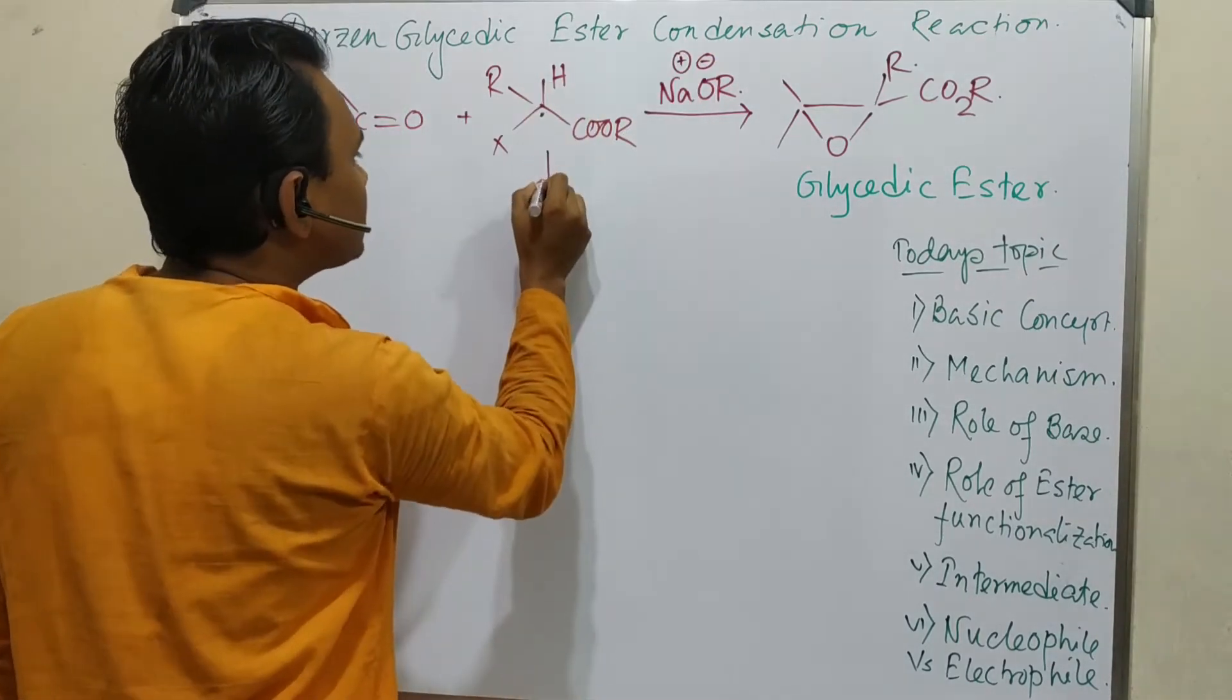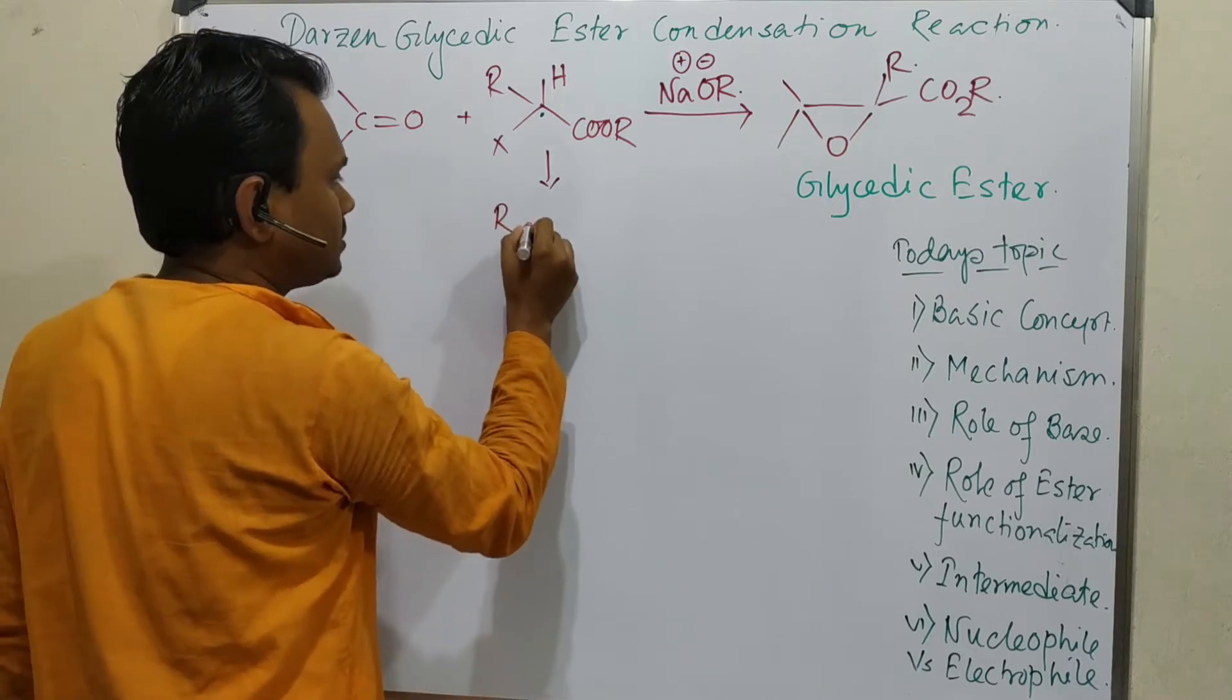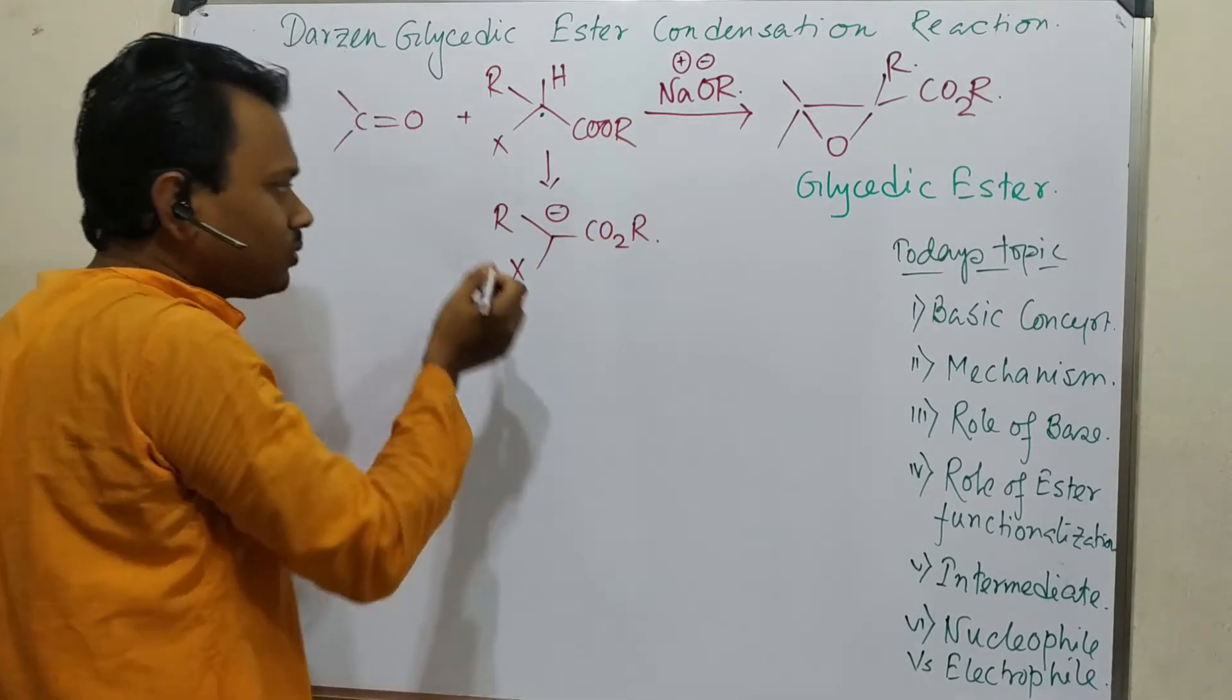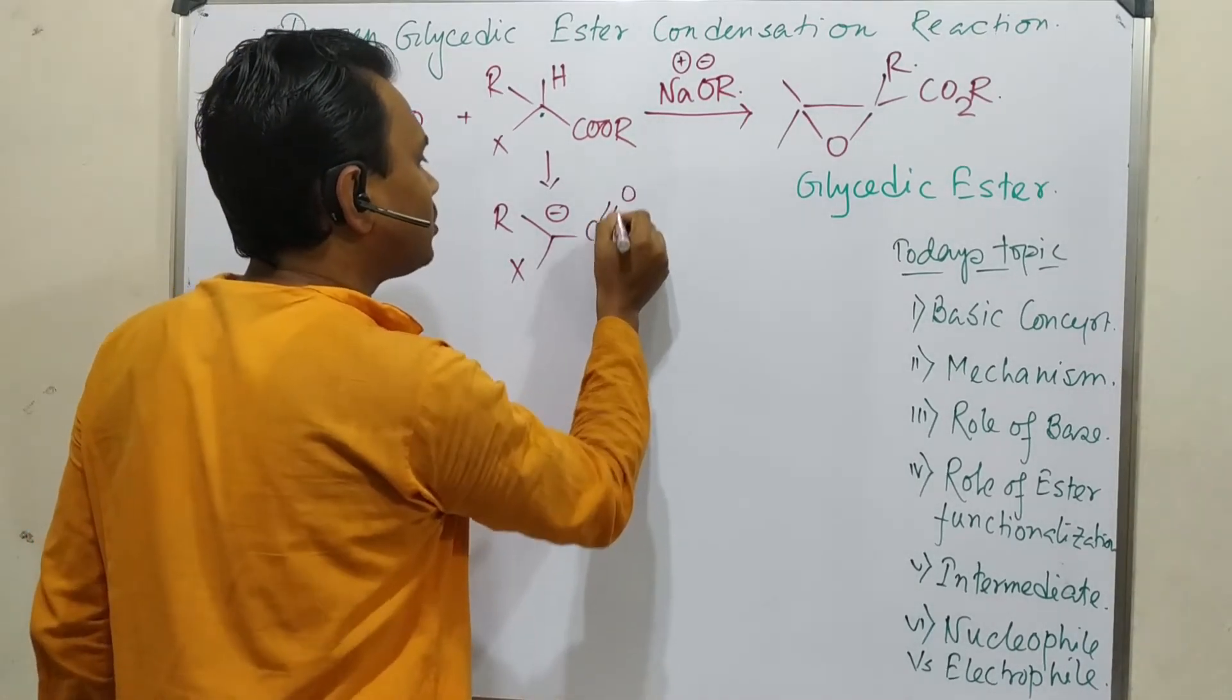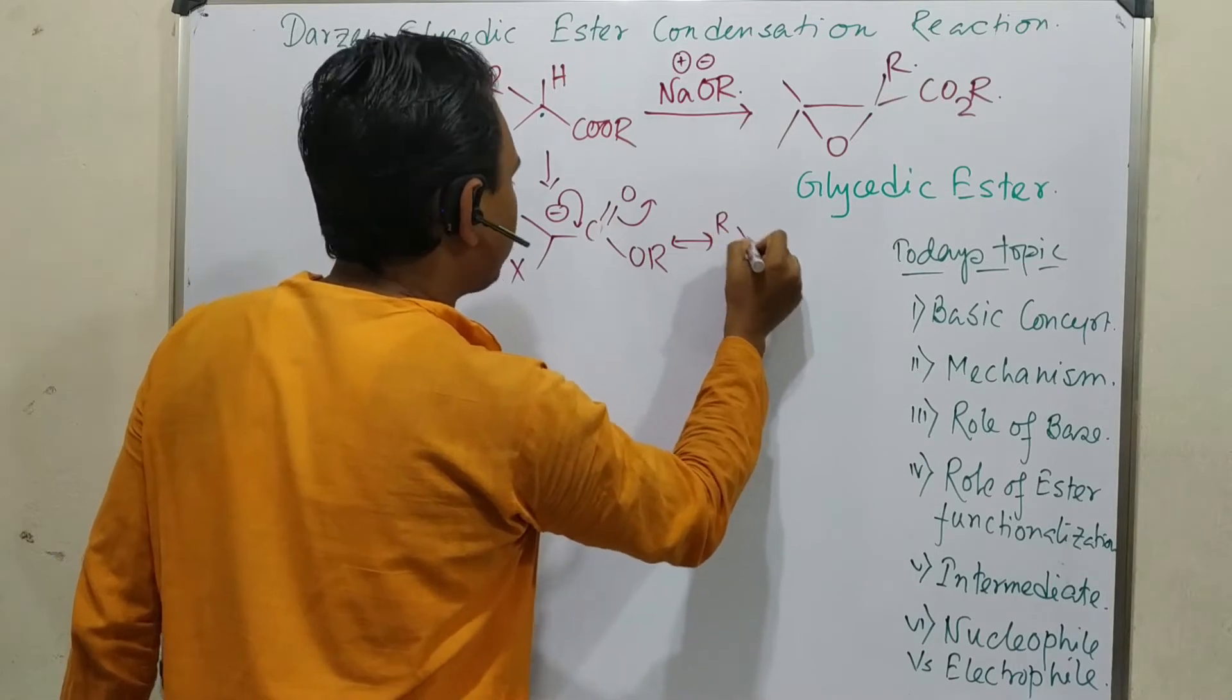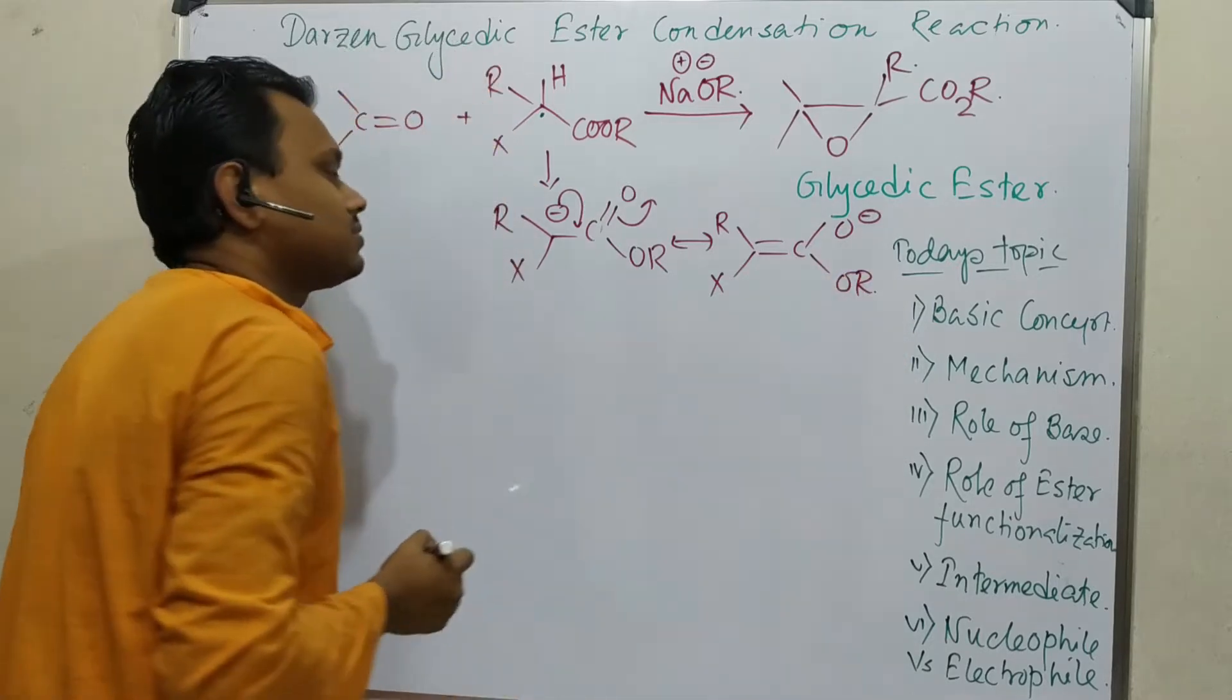So this reaction is the preparation of the enolate. This is X-, this is CO2R. And we know that if we draw this CO2R properly, this is C=O-OR, so this negative charge will come here. The final product is X-CH-CO2R - this is the resonance structure.